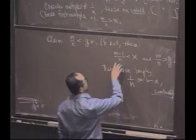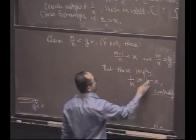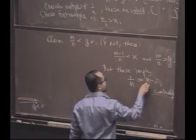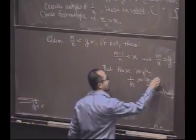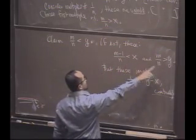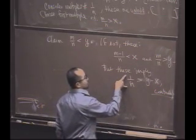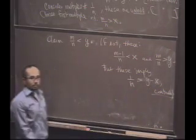Why is that? Multiply this by minus to switch the inequality and add the two inequalities, and you get 1 over n is the difference on one side, and y minus x is the difference on the other.